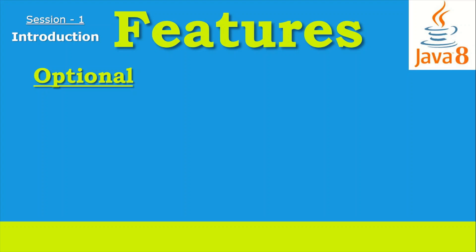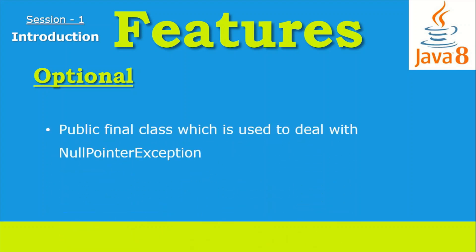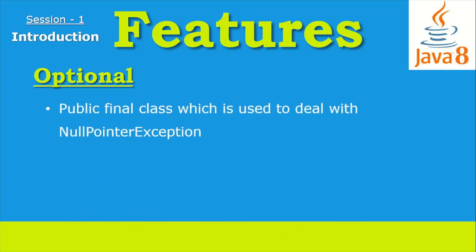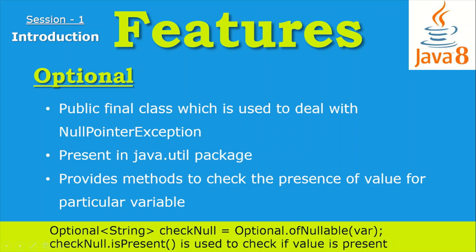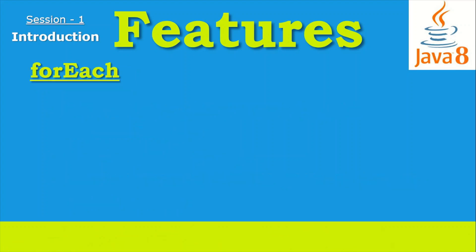The next feature introduced in Java 8 was Optional. In day-to-day programming we face NullPointerException a lot and have to write a lot of if-else logic to handle them. Java introduced a new class Optional in Java 8 — it is a public final class used to deal with NullPointerExceptions. We must import java.util package to use it. It provides methods to check the presence of a value for a particular variable. For example, we can define Optional<String> checkNull = Optional.ofNullable(variable), and then use checkNull.isPresent() to check if a value is present.